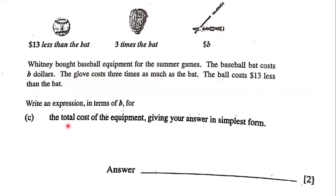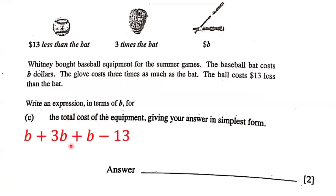Next, the question states: write an expression in terms of B for the total cost of the equipment, given your answer in simplest form. We want the total cost, so we have to add the cost of the baseball bat, plus the cost of the glove which is 3B, and then plus the cost of the ball which is B minus 13.